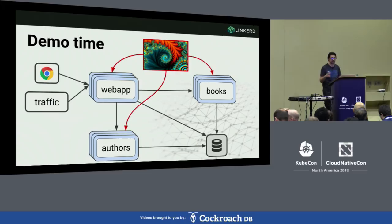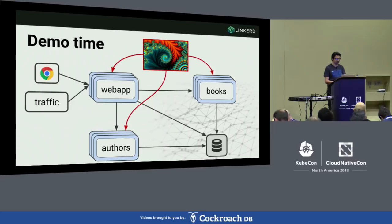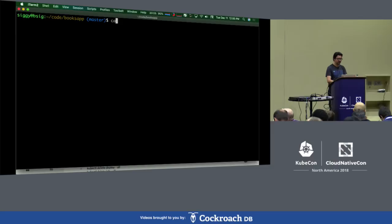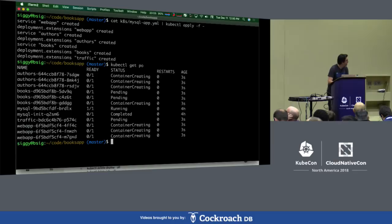Frederick was mentioning churn in this orchestrated environment — things are coming up and down. How do these tools perform when that's all going on? So the first thing I'm going to do is deploy my books app. If that all went right, I'm spinning up nine pods plus something from MySQL plus a traffic server.